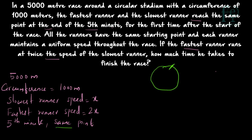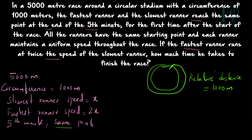Same point in a circular track means the one person has completed an entire extra round and is meeting the slowest runner at the same point. So the relative distance covered is equal to 1000 meters — that is how much more the fastest runner has run compared to the slowest runner, which equals the circumference of the circular track. The time taken for covering this relative distance is 5 minutes.